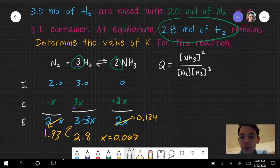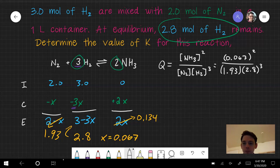Lastly, I just need to plug these values in that I got from my ICE table. So NH3 is going to be 0.067 squared. And my denominator is going to be 1.93. No bracket there, so it's just a number. That's raised to the power of 1, so I don't need to write that.